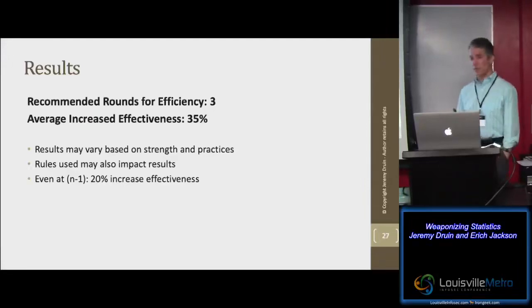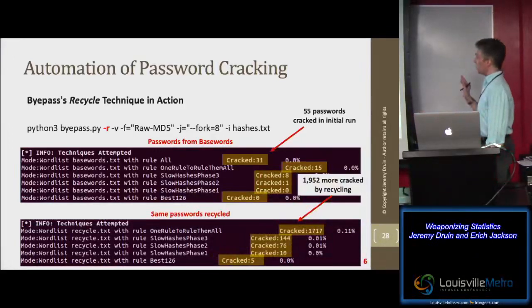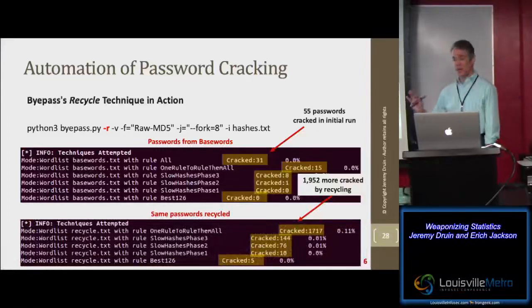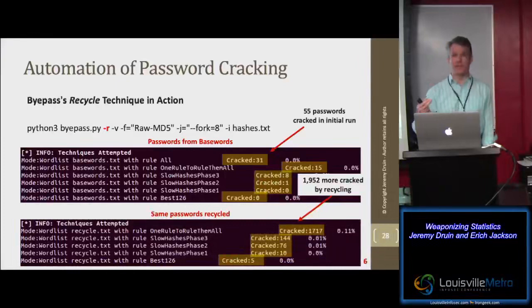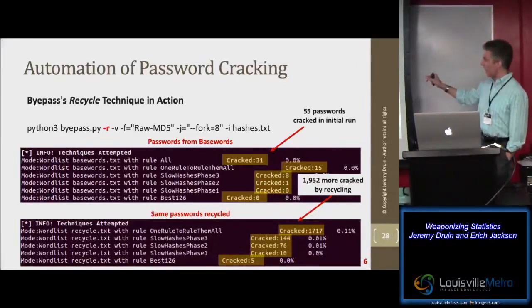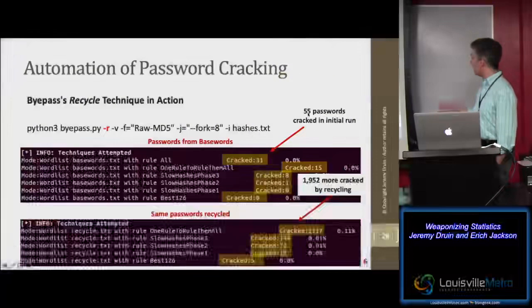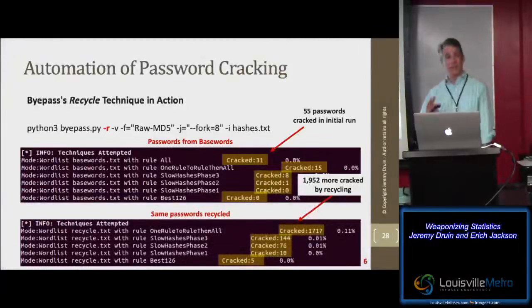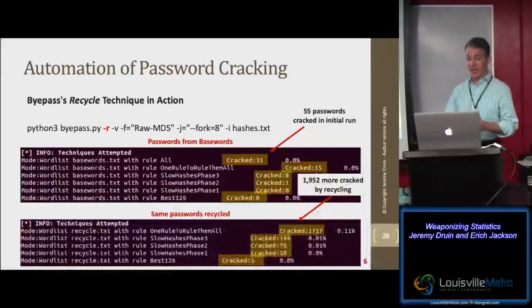Here's where we took the recycle technique and put it against eHarmony. What kind of passwords would you expect there? Probably love-related phrases like 'I love you', 'iluvu', and so on — painful, but we put them all in. Running without recycling, we cracked 55 in the initial run. With recycling, that's nearly 2,000 more cracked passwords — way above the percentage we anticipated. That's astonishing, and that's when we knew we really had something to show people.